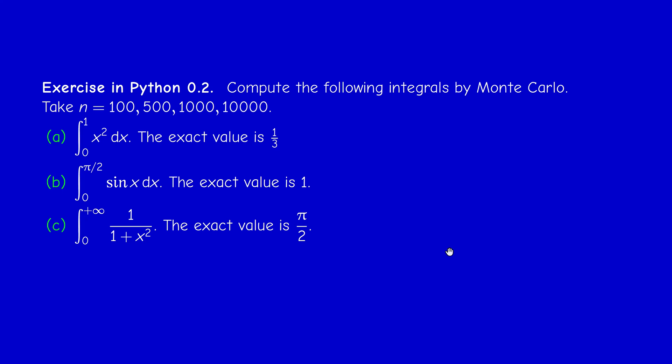The first exercise is to test this method to compute some familiar integrals whose exact value is known. Start by taking 100 samples, then 500, then 1000, then 10,000 to see what happens. I suggest you pause the video and try to implement the Monte Carlo algorithm on your own, and in the next video I will implement it myself.